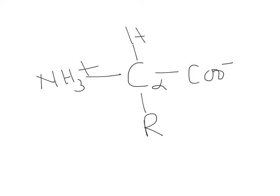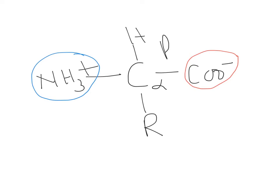Before getting into individual amino acids, let's understand why the carboxylate group is COO⁻ and why the amino group is NH3+. To understand this, we need to know the pKa values. On average, the carboxylate group pKa in an amino acid is approximately 2, and for the amino group the pKa is approximately 9.5.